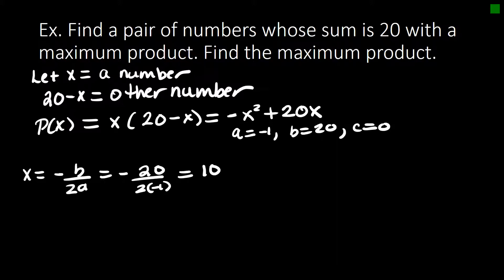Okay? So this gives us one of the numbers, x, and the other number is 20 minus 10 or it's also 10. So 10 and 10 maximize the product.